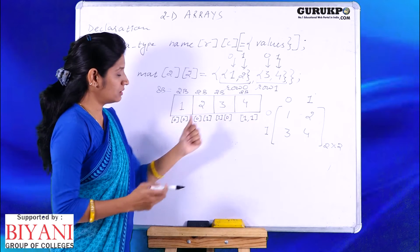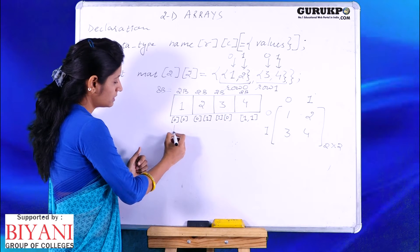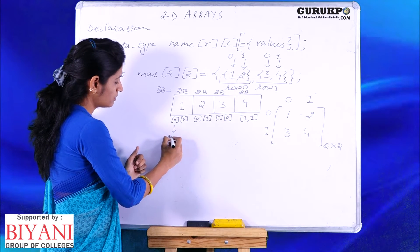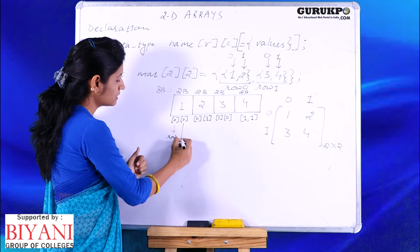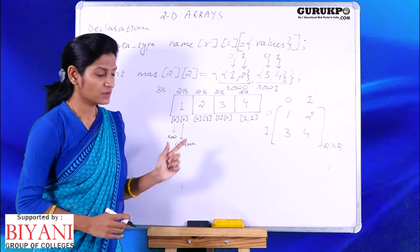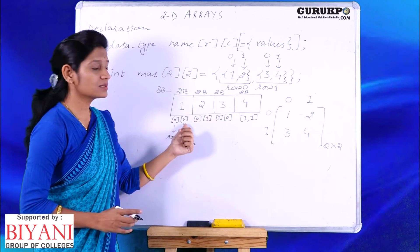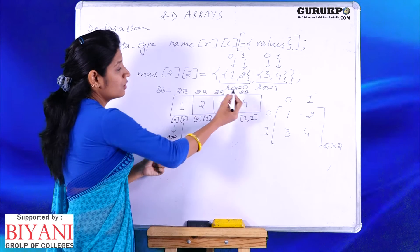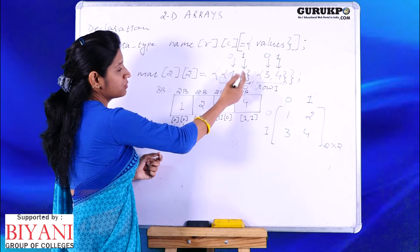Now, row 0 and row 1. This index is representing the row number and it is representing the column number. In every case this is the row number and this is the column number: row 0 column 0, 1.